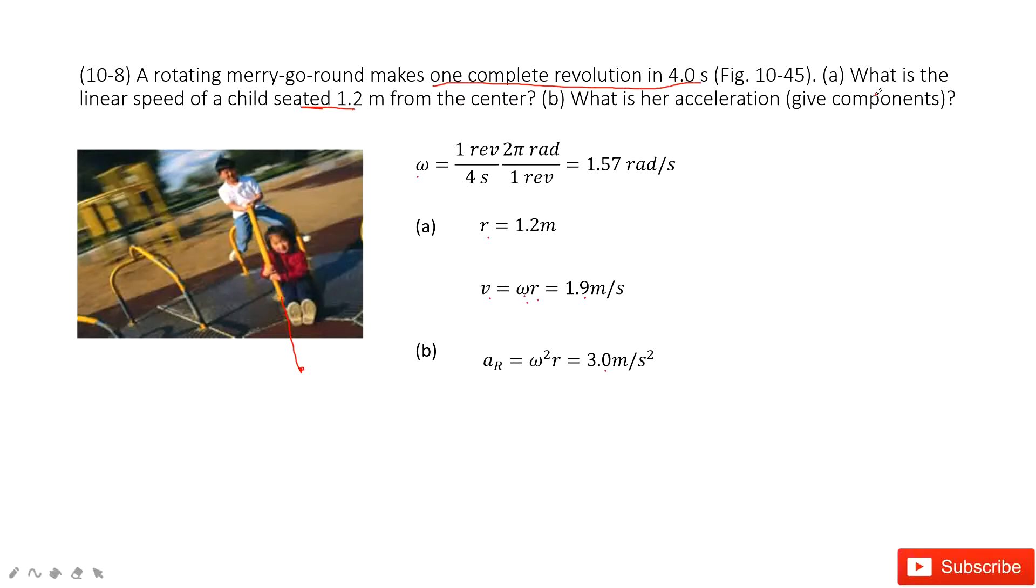There, they give you the components. So what is the component for this acceleration? It is the radial acceleration. Agree? For the tangential acceleration, it's zero. Why? Because we consider the angular velocity is constant. There is no change in the angular velocity. So there is no angular acceleration. Agree? Thank you.